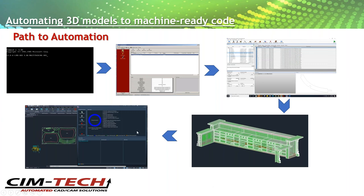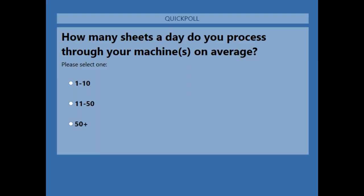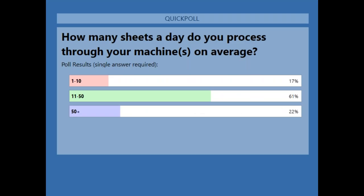Survey question: How many sheets a day do you process through your machine or machines on average — 1 to 10, 11 to 50, or 50 plus? Looking at the results, we have a pretty good spread — some high production and some specialized shops as well.